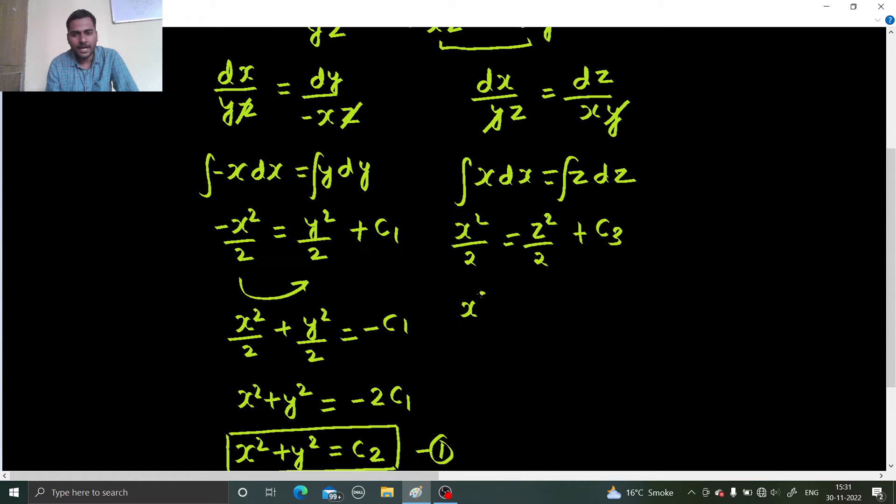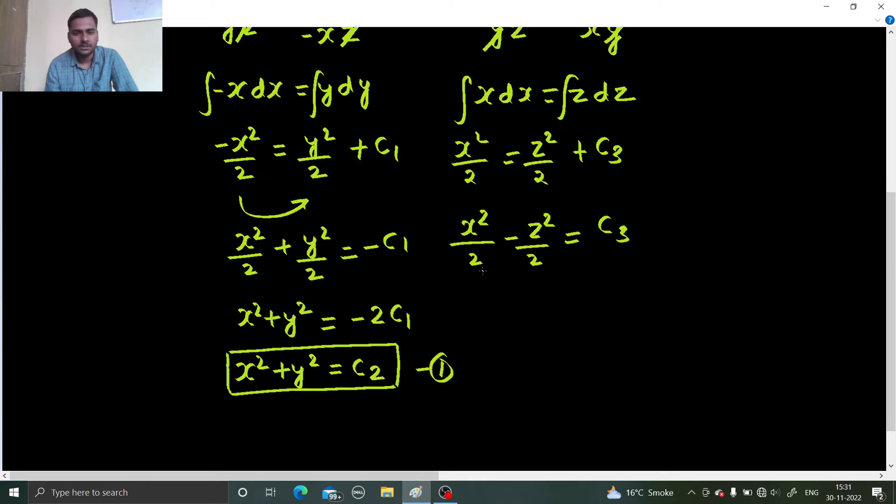x square by 2 equals to z square by 2 plus c3. So x square by 2 minus z square by 2 equals to c3. So this is x square minus z square equals to let's say this c4. And also you can let this as equal to u and this is equal to v. So this is your equation number two.